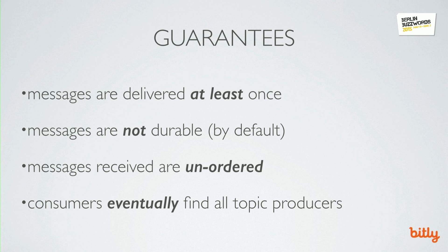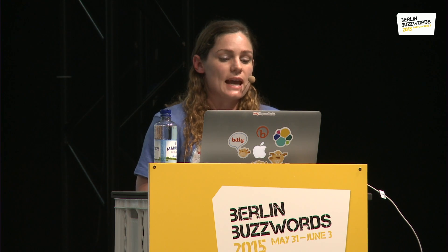What are some NSQ guarantees? Messages are delivered at least once, which means you can and will receive duplicates. This could be for a variety of reasons such as client timeouts, disconnections, or re-queuing of messages. It's the client's responsibility to perform idempotent operations or de-dupe. Messages are also not durable by default — we talked previously about the configurable high-water mark, but at Bitly we run with a hybrid in-memory on-disk setup. Messages received are unordered, so you can't rely on the order of messages being delivered to consumers, as a result of re-queues and the combination of in-memory and on-disk storage, and the fact that each NSQD node shares nothing. Consumers will eventually find all topic producers, as the discovery service NSQ Lookup D is designed to be eventually consistent, and Lookup D nodes don't coordinate to maintain state or answer queries.